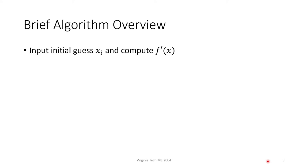From a high-level perspective, the Newton-Raphson method uses the starting guess and the first derivative to deduce the root. First, we need to input an initial guess x sub i and compute the derivative of f of x.